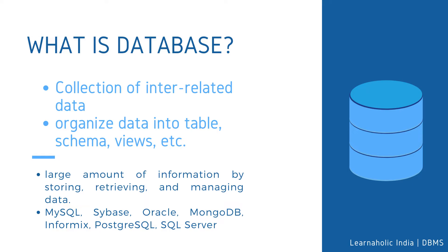Now let's take a look at what is a database. A database is an organized collection of data so that it can be easily accessed and managed. You can organize data into tables, rows, and columns, and index it to make it easier to find relevant information. Database handlers create a database in such a way that only one set of software programs provides access to data for all users. The main purpose of a database is to operate a large amount of information by storing, retrieving, and managing data. There are many dynamic websites on the world wide web nowadays which are handled through databases. For example, a model that checks the availability of rooms in a hotel is an example of a dynamic website that uses a database.